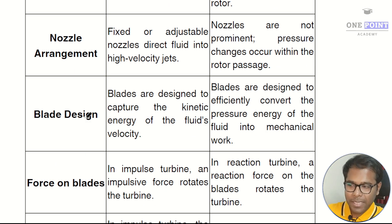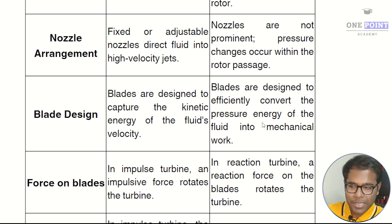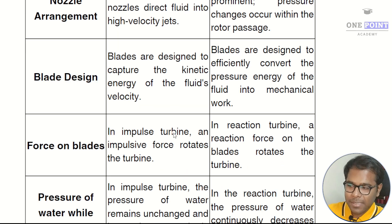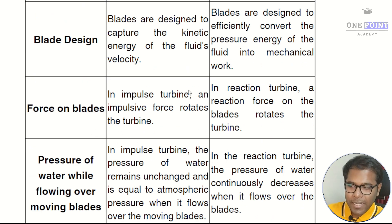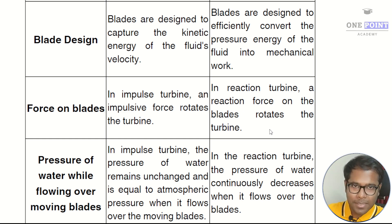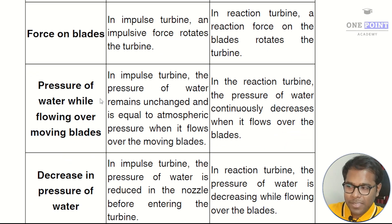In a reaction turbine, blades are designed to efficiently convert the pressure energy of the fluid into mechanical work. The next difference is based on force on blades: in an impulse turbine an impulsive force rotates the turbine, whereas in a reaction turbine a reaction force on the blades rotates the turbine.